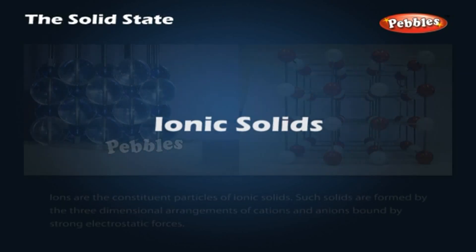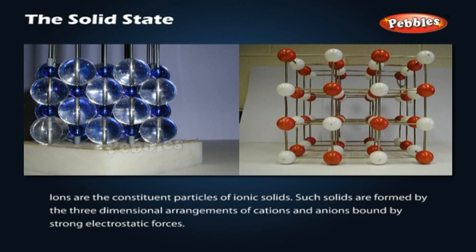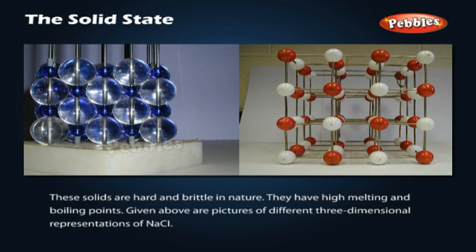Ionic solids. Ions are the constituent particles of ionic solids. Such solids are formed by the three-dimensional arrangements of cations and anions bound by strong electrostatic forces. These solids are hard and brittle in nature. They have high melting and boiling points. Shown above are pictures of different three-dimensional representations of NaCl.